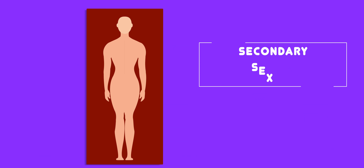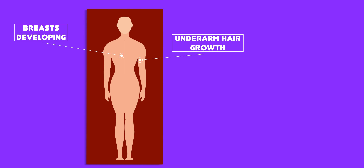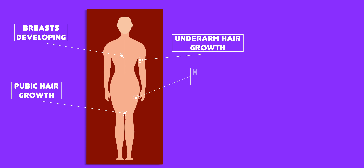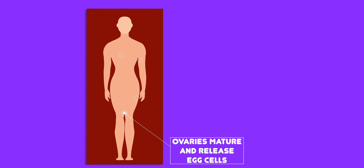Oestrogen is important for the development of secondary sexual characteristics in females, which includes the breast developing, underarm hair growth, pubic hair growth, the hips getting wider, and the ovaries starting to mature and release eggs.